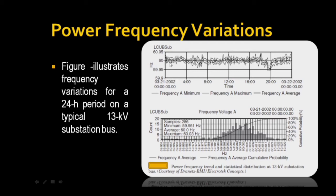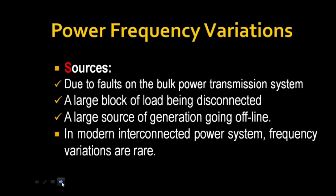Observe this diagram clearly — there is a power frequency variation, that is the deviation from the normal frequency value. From the sources point of view, power frequency variations can be caused by faults on the bulk power transmission system, a large block of load being disconnected, or a large source of generation going offline.